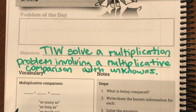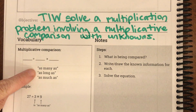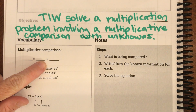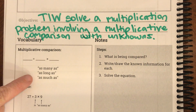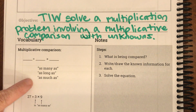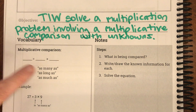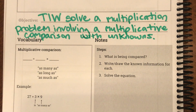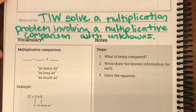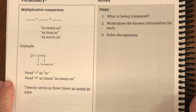We've done this in the past lesson. Our multiplicative comparisons show that the multiplication sign can say 'times as many as,' 'times as long as,' or 'times as much as' with unknowns. So we're going to have these comparisons and we're going to be solving some multiplication problems. It sounds a lot more complicated than it is. Let's look at our vocabulary before we get started.